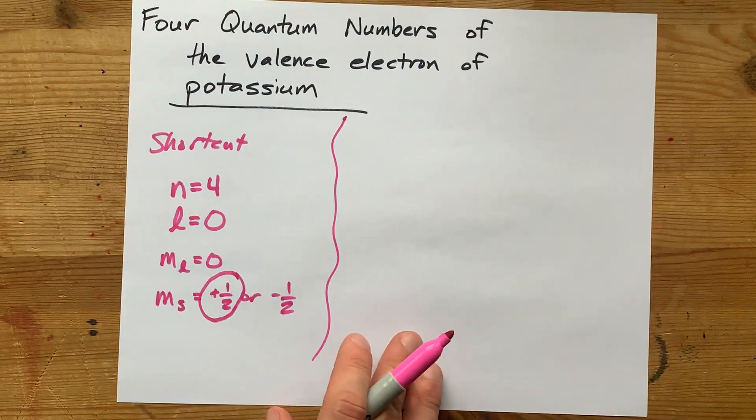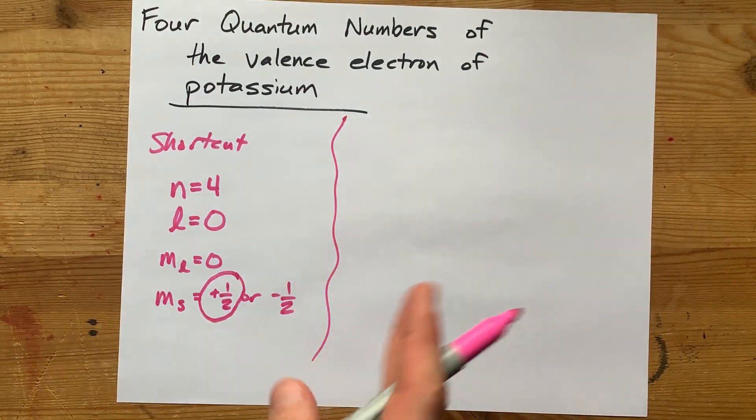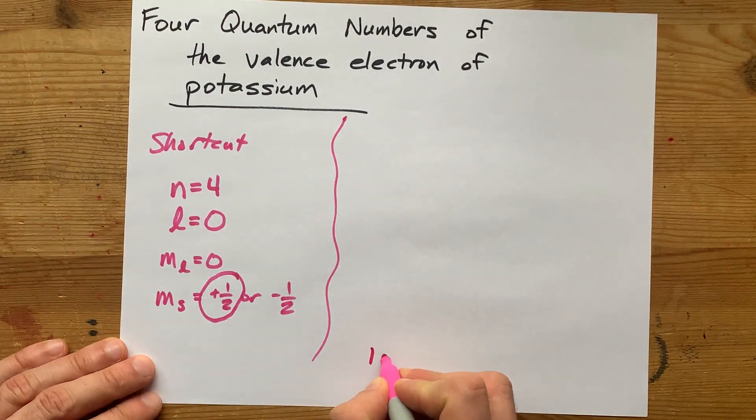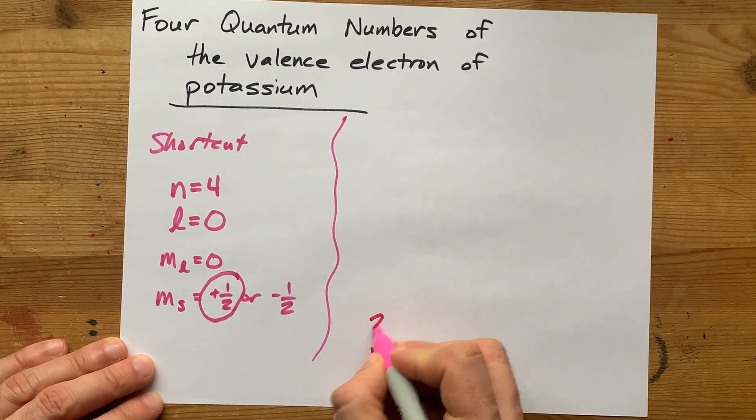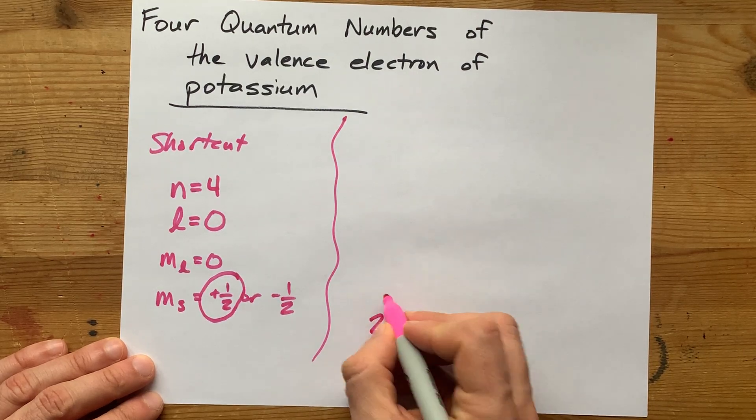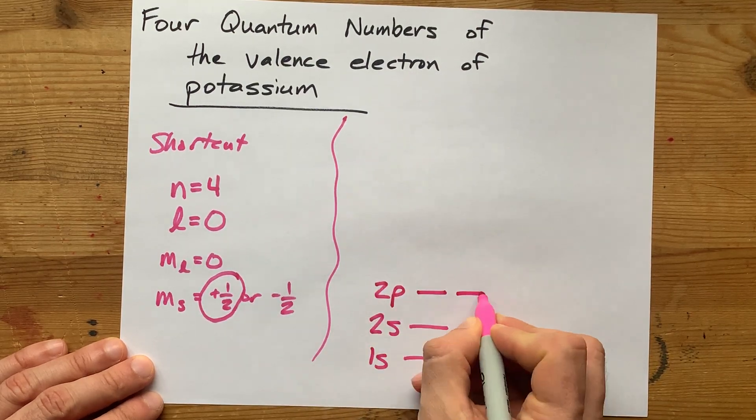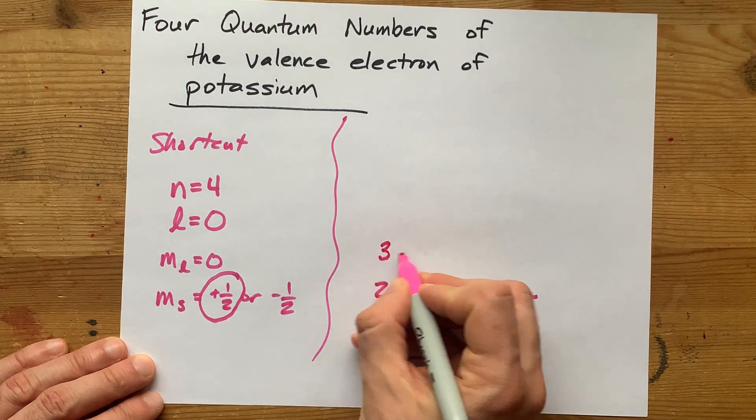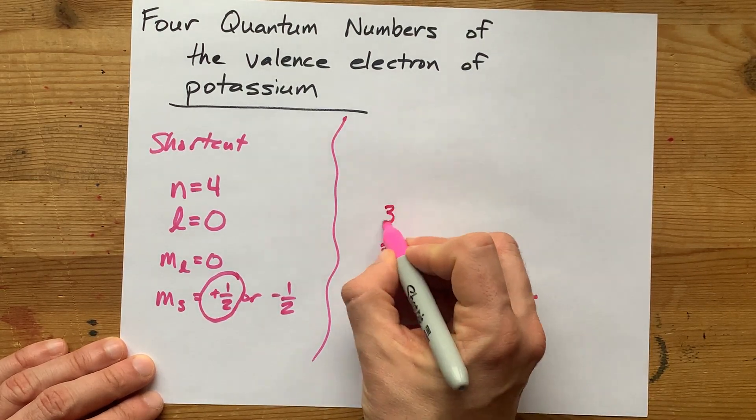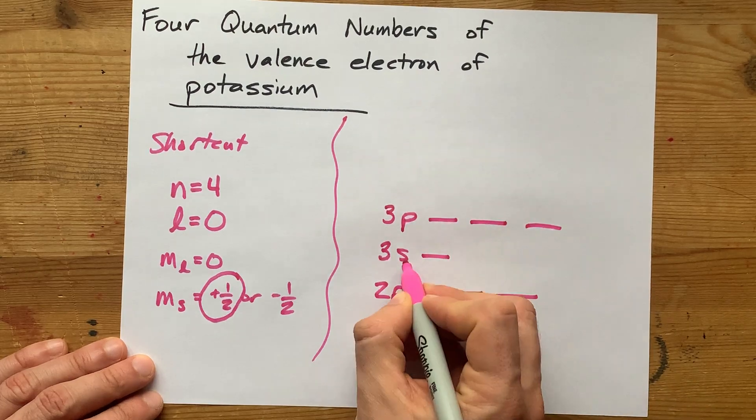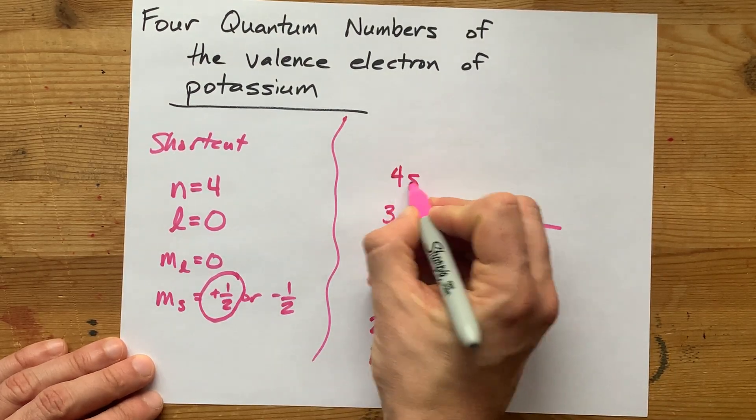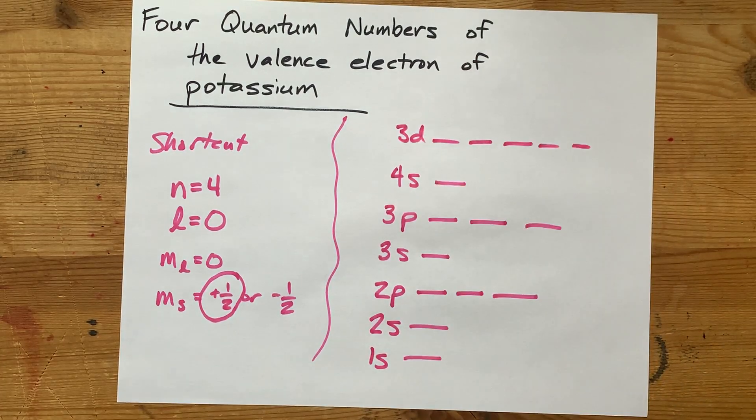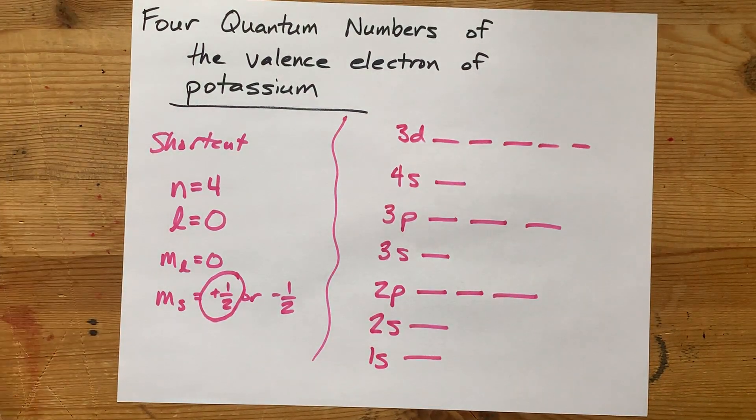Now, the long way that I also use to double-check my answer is to draw an electron configuration diagram. 1S can hold two electrons. The second shell can hold up to 8 because it goes 2S2, 2P6. The third shell can hold a whole bunch, but you fill 3S and 3P, then 4S, then 3D, and it goes on like that, right?